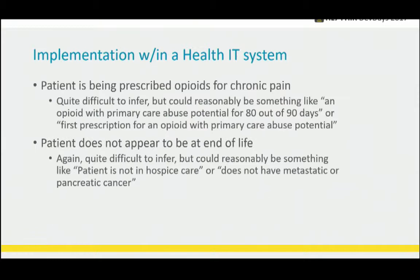How do you actually implement that within a health IT system? Patient is being prescribed opioids for chronic pain — that's quite difficult to infer. There are lots of different cases where patients are being prescribed opioids, so determining when to trigger this recommendation is a touchy subject. One reasonable approach: primary care abuse potential for 80 out of 90 days. For end of life, another approach: patient is not in hospice or does not have metastatic or pancreatic cancer.